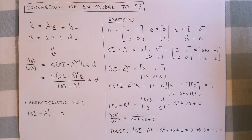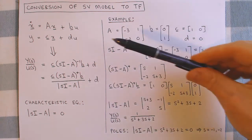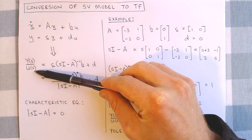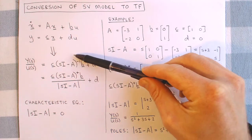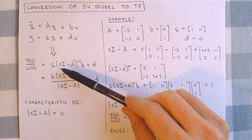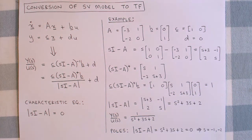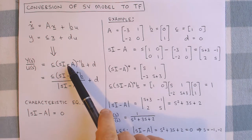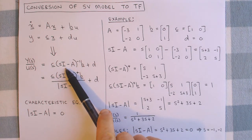The second transformation we look at is the transformation from a state variable model to a transfer function. If our state variable model is described by the standard state variable equations, the transfer function from the input u to the output y is given by this equation, where A, B, C, and D are the system matrices, S is the Laplace variable, and I is the identity matrix.